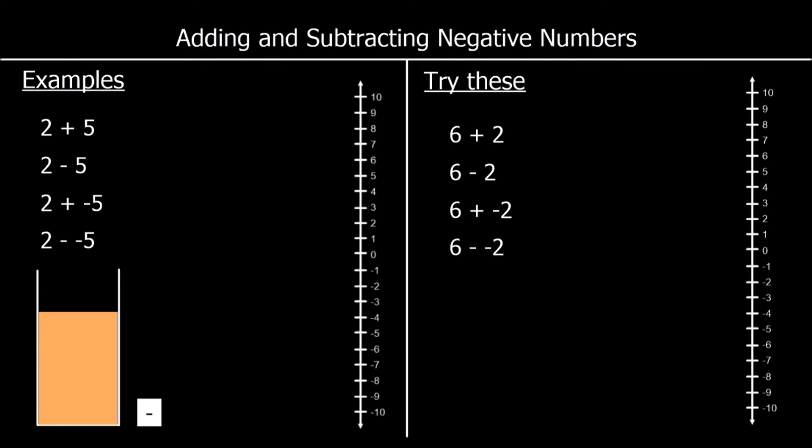Here we're going to look at adding and subtracting negative numbers. We have four examples. The first one: 2 plus 5. The second one: 2 minus 5. The third one: 2 plus a negative 5. And finally: 2 minus a negative 5.